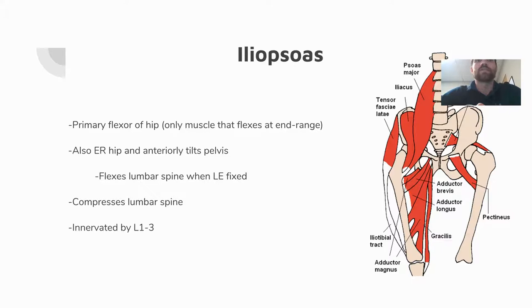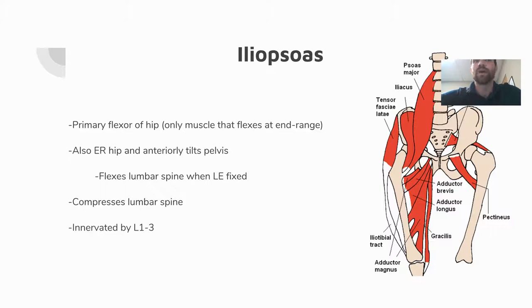At end-range hip flexion, the iliopsoas is the only muscle that can flex the hip — the rectus femoris cannot assist at that endpoint. People often forget that it also attaches to the lumbar spine and can anteriorly tilt the pelvis, flex the lumbar spine when legs are fixed, and compress the lumbar spine. This compression can be a good stabilizer but also increases pain when there is lumbar irritability.